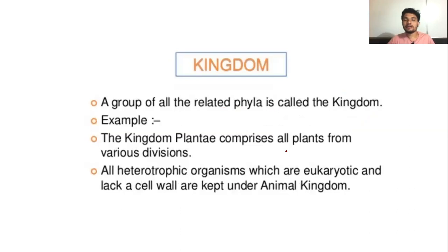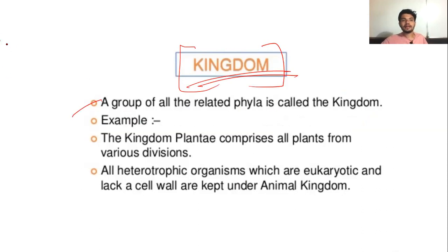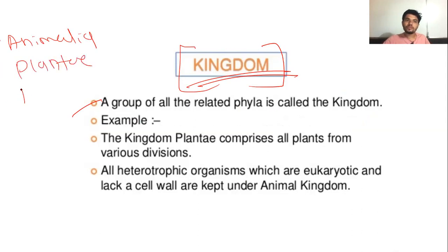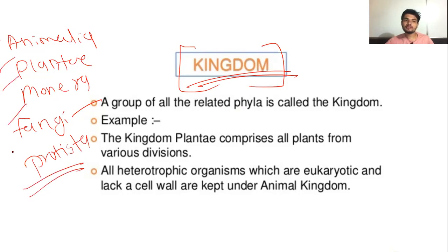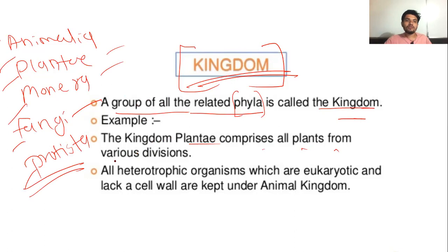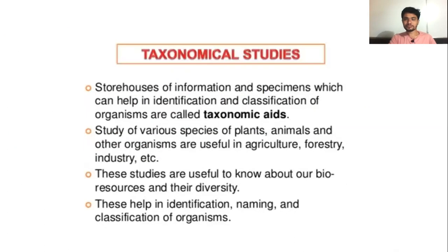Then the ultimate and major category, which is Kingdom. We all know that there are five major kingdoms: Animalia, Plantae, Monera (in which bacteria are present), Fungi, and Protista. This five-kingdom system was given by R.H. Whittaker. The group of all related phyla is called a kingdom. For example, Plantae comprises all plants from various divisions. This is all about taxonomical categories.